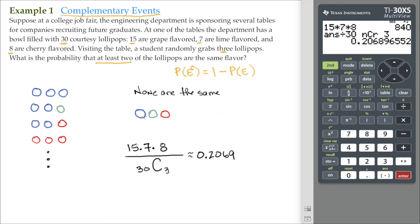So there's approximately 0.2069 probability that he grabs one of each flavor. But we don't want this. We want this. We want everything else. So what do we do? Well, we simply subtract that from one.